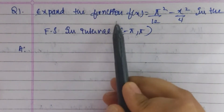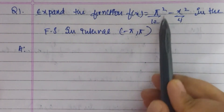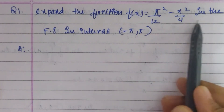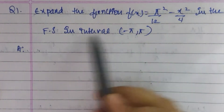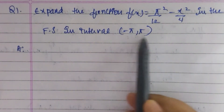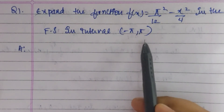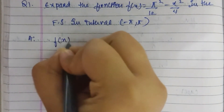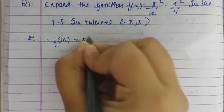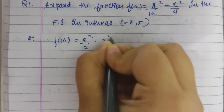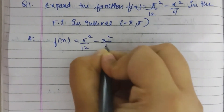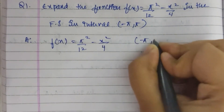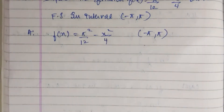Expand the function f of x equals pi squared by 12 minus x squared by 4 as a Fourier series in the interval minus pi to pi. So f of x equals pi squared by 12 minus x squared by 4, and our interval is minus pi to pi.